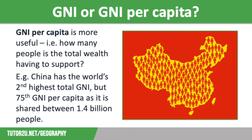But what about the UK? In terms of total GNI, the UK is in sixth place with around US$3.3 trillion, and is ranked 27th for GNI per capita with a figure of US$47,800.